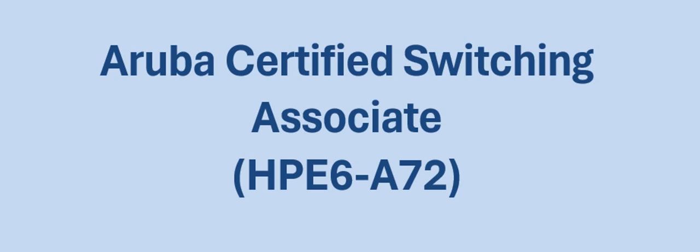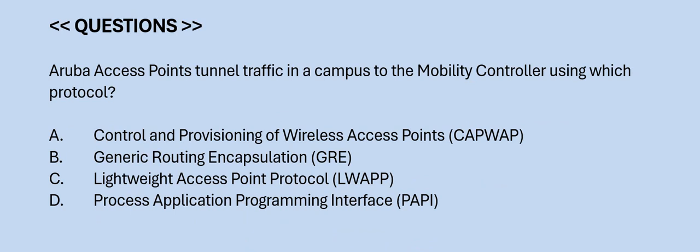Question: Aruba access points tunnel traffic in a campus to the mobility controller using which protocol? Option A: control and processing of wireless points. Option B: Generic Routing Encapsulation (GRE). Option C: Lightweight Access Point Protocol (LWAPP). Option D: Process Application Programming Interface (PAPI). The correct answer is Option B.